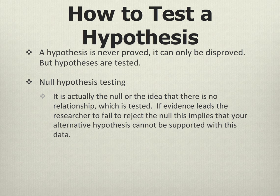When one sets about to test a hypothesis, it is important to keep in mind that your hypothesis is never actually proved — it can only be disproved. So in order to test your hypothesis, what we actually do is we test the null. We test the idea that there is no relationship between the variables. If there's not no relationship between the variables, then we've established that there is a relationship. The null hypothesis is that there is no relationship between the variables.